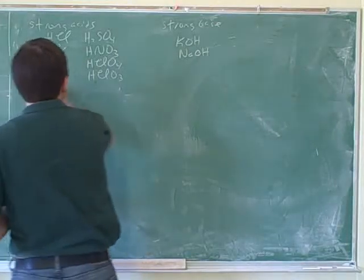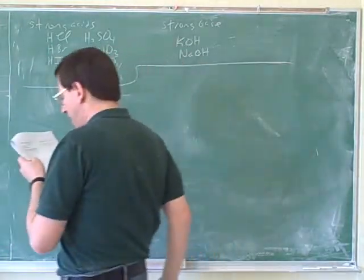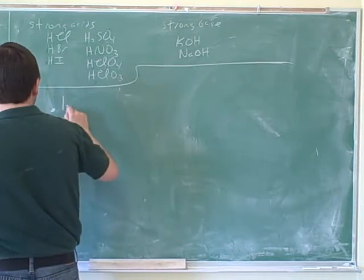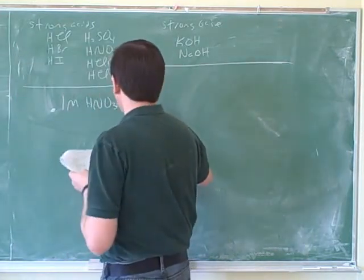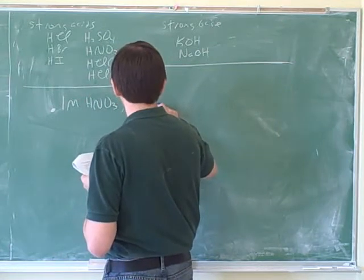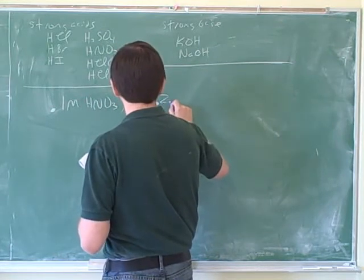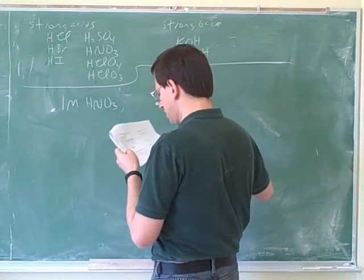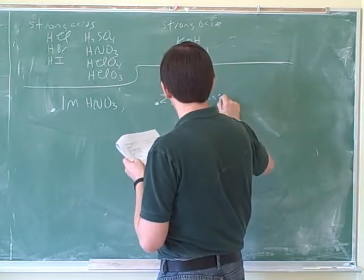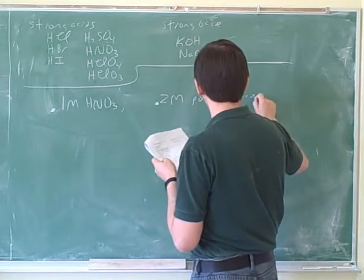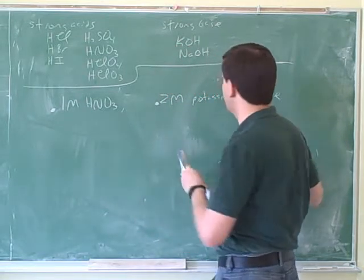Now, there is a complication that we should talk about. Suppose that we had 0.1 molar nitric acid and we have 0.2 molar potassium acetate. Would that be a buffer?